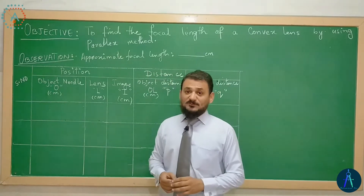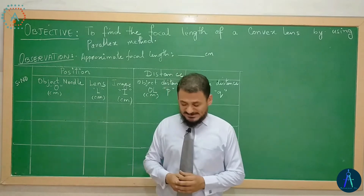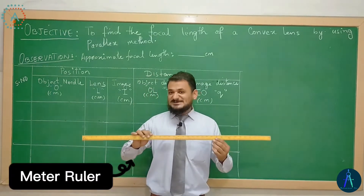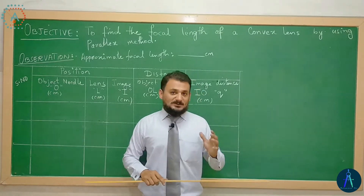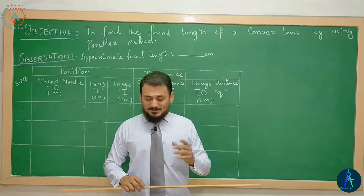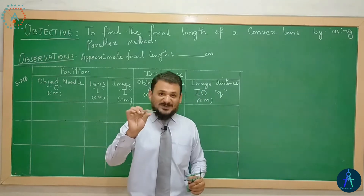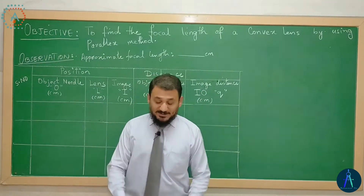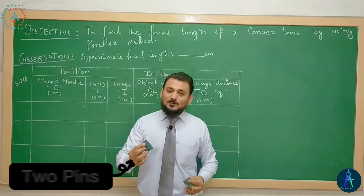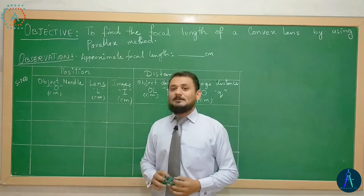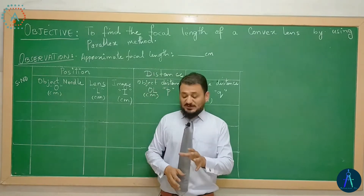Now let's see the apparatus. First of all we have a convex lens جس کی focal length ہم find out کرنے جا رہے ہیں۔ Then we have a meter scale جسے use کر کے ہم positions معلوم کر کے distance of image and object from the lens معلوم کریں گے۔ پھر ہمارے پاس ایک stand ہے جس میں ہم اپنا convex lens fix کریں گے۔ Finally ہمارے پاس دو pins ہیں — one is the object pin اور دوسری ہماری image pin ہے۔